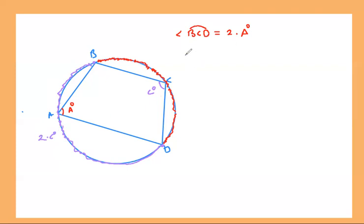So the angle measure of BAD, arc BAD, is going to be two times C degrees. Okay, so let me write the previous one as well. So this was two times A degrees.